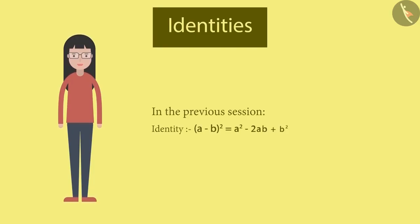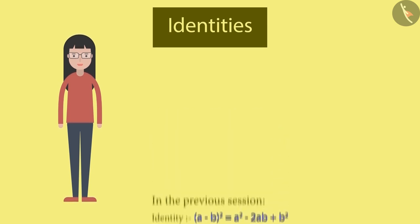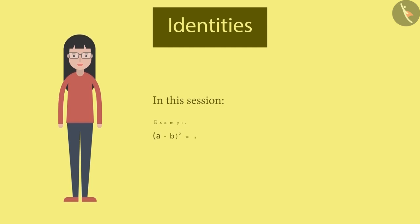In the previous session, we had seen this identity: a minus b raised to the power of 2 is equal to a raised to the power of 2 minus 2ab plus b raised to the power of 2. In this session, we will see how to use this identity with the help of some examples.